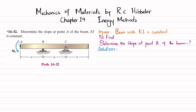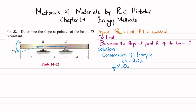We will use conservation of energy: the strain energy due to external work equals the strain energy due to bending. Due to moment M0, the external strain energy will equal (1/2) M0 times theta_A, where theta_A is the slope at point A. This equals the strain energy due to bending.